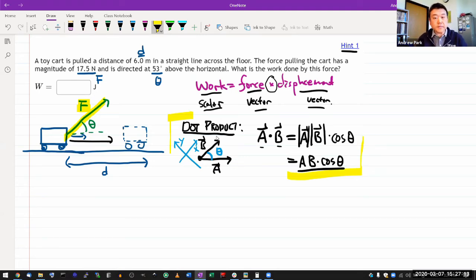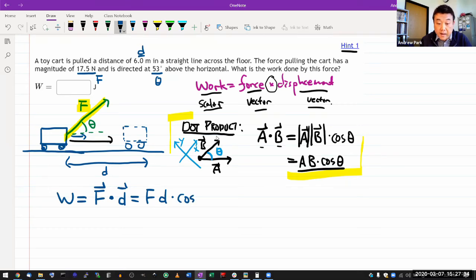So work is defined using this dot product. Definition of work is force as a vector, dot product with the displacement as a vector. Or, the formula that you should use is the magnitude of force, times the distance d, times cosine theta. And this is where you do want to be careful. Make sure the theta is the angle between these two vectors. So as far as the math you have to do here, the math is simple.